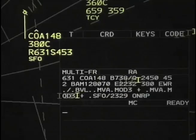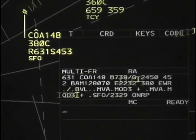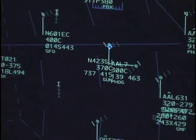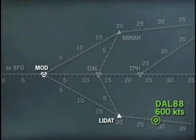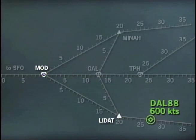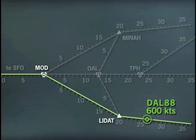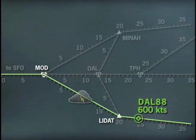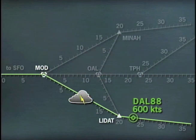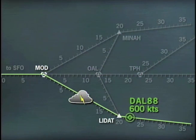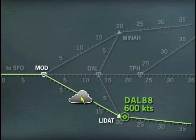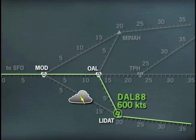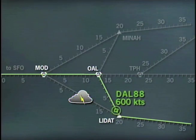Each plane has a flight plan that includes its route of travel from intersection to intersection, as well as the plane's speed and altitude. Here's a flight route for Delta 88 — the pilot will fly directly from LIDAT to Modesto. But weather can affect a flight plan. Notice the black cloud representing a thunderstorm between LIDAT and Modesto. To avoid this storm, we give the Delta 88 pilot a longer, safer route that takes the plane through Coldale.